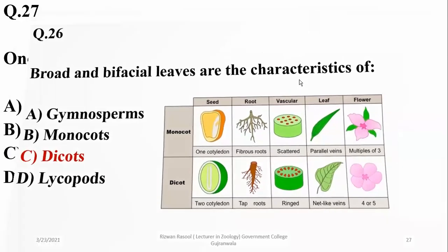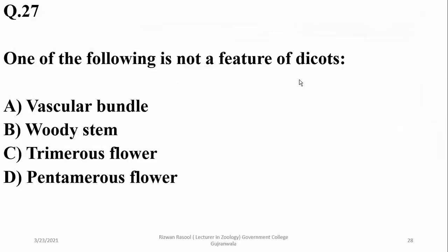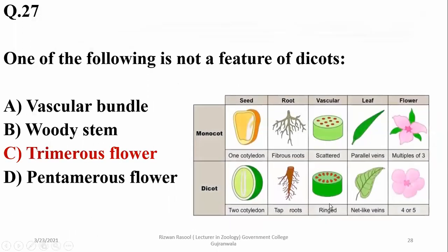Number 27: one of the following is not a feature of dicots. Dicots have vascular bundles like monocots, a woody stem as well as herbaceous stem, and pentamerous flowers, but trimerous flowers are found in monocots — flower petals in multiples of three are found in monocots.